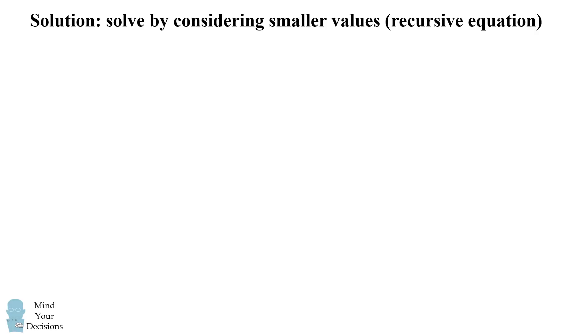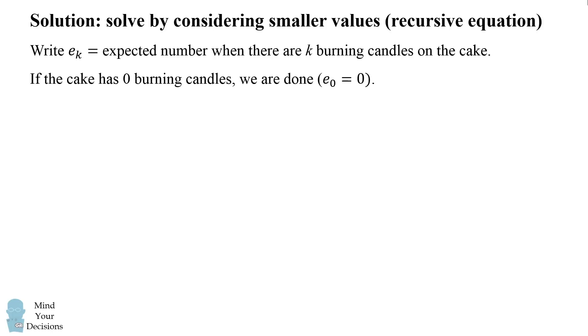So one way to solve this problem is by considering smaller values and setting up a recursive equation. Let's write e_k to be the expected number when there are k burning candles on the cake. If the cake has zero burning candles, then we're done. e_0 equals 0. For a cake with one burning candle, we are sure to blow it out in one attempt. e_1 equals 1.